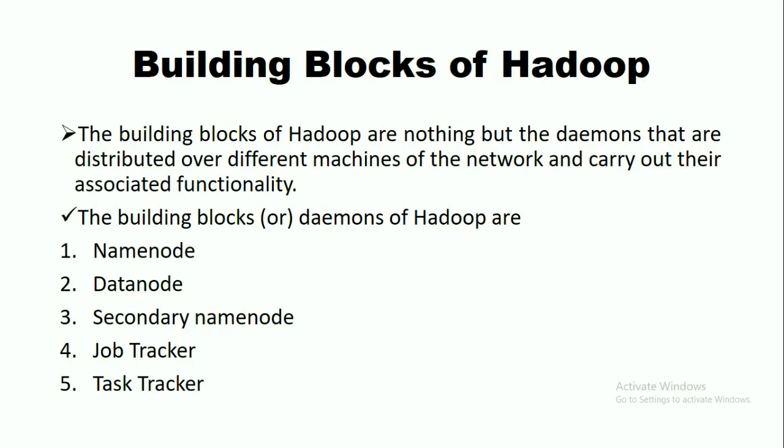The building blocks of Hadoop are nothing but the daemons that are distributed over different machines of the network and carry out their associated functionality. The building blocks or daemons of Hadoop are: NameNode, DataNode, Secondary NameNode, JobTracker, and TaskTracker.